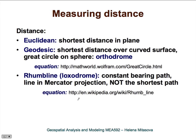In that situation, it is a little bit more complicated. Most often we use the shortest distance over a curved surface, which is called geodesic. On a sphere, it is the great circle, a so-called orthodrome. You can find a very nice derivation of the equations on the Math World website. There is another type of line called a rhumb line, which is a line that has a constant bearing path. This line appears as a straight line in Mercator projection, but it is important to be aware that this is not the shortest path.